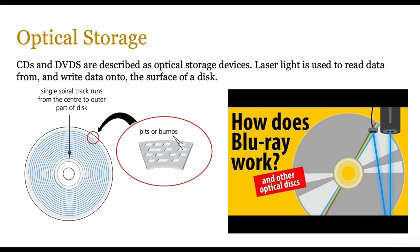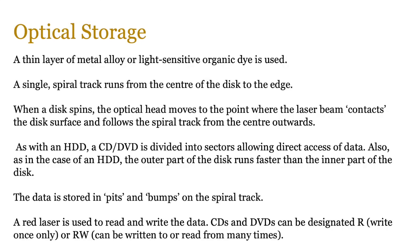CDs and DVDs are described as optical storage devices — laser light is used to read data from and write data onto the surface of the disk. The disk is organized in spiral tracks running from the center to the outer part, and there are pits or bumps created using the laser and then read by reflecting light. Optical storage requires a thin layer of metal alloy or light-sensitive organic dye coated over the disc material. There is a single spiral track running from the center to the edge, and as the disk spins the optical head moves to where the laser beam contacts the disk surface and follows that spiral track.